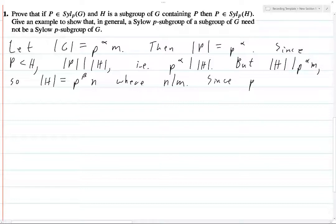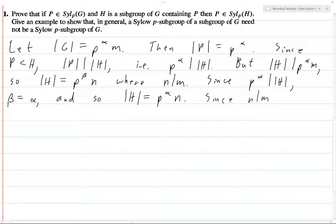Let's write that: since P to the alpha divides H, beta equals alpha, and so the order of H equals P to the alpha N. Since N divides M, and by definition of a P Sylow subgroup, P cannot divide M. We know that P does not divide N, because if P did divide N, then it would divide M as well.